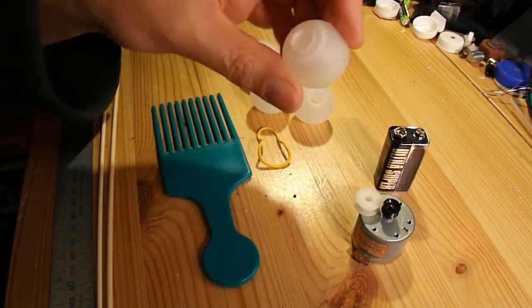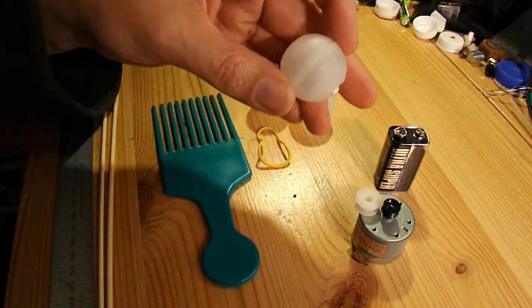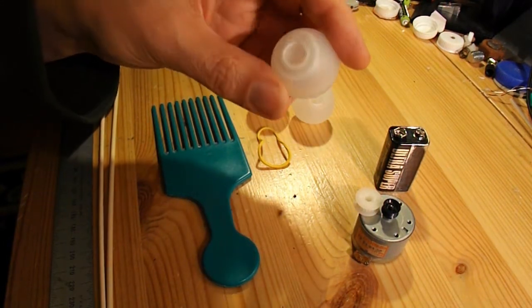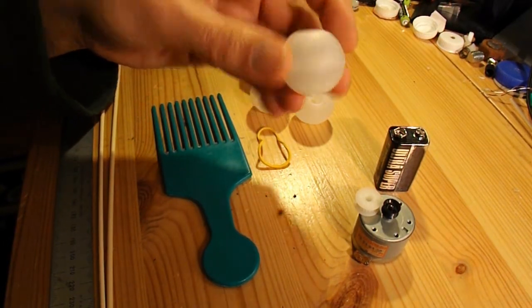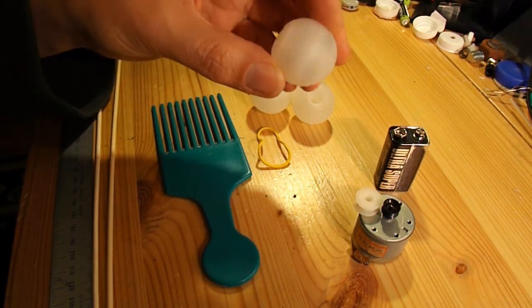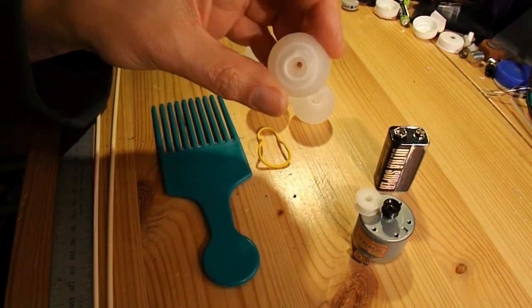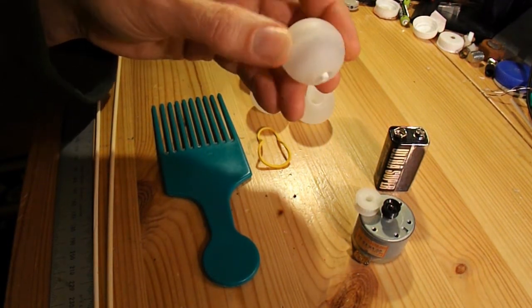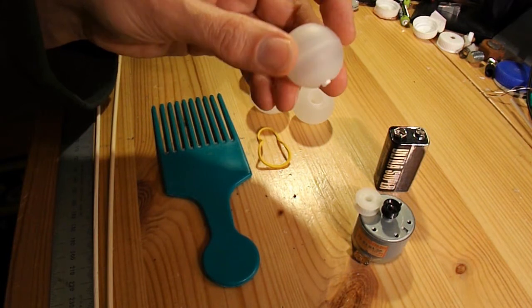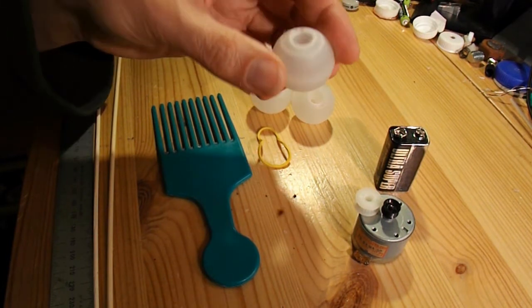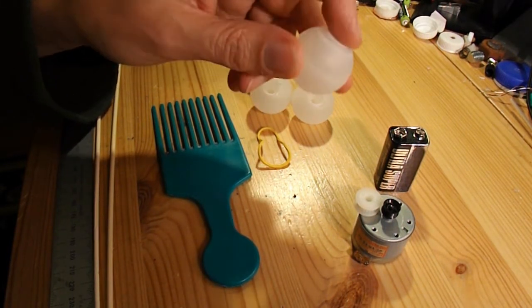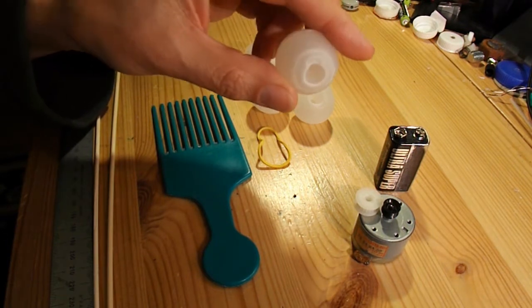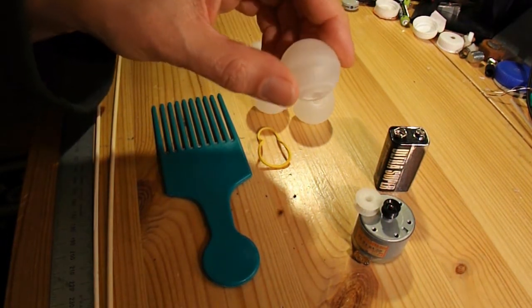These things that look like ping pong balls are beer can widgets. That's what they're called. You find them in certain sorts of beer cans. And I'll put a link to a video I did using them one time in the past, where I actually showed how I got them out of the beer cans. So I'll stick that link in the notes later.